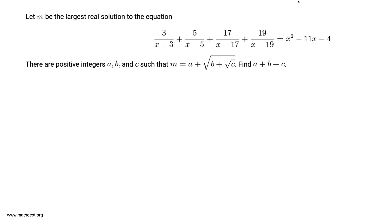At first glance, this equation doesn't look super easy to deal with. For example, 3/(x-3), 5/(x-5), 17/(x-17), 19/(x-19) — it's not clear what to do with these. So the first thing we do is make things a little bit easier for ourselves, and the way we do this is we rewrite these fractions in a different way.